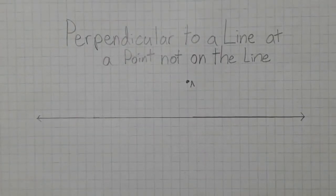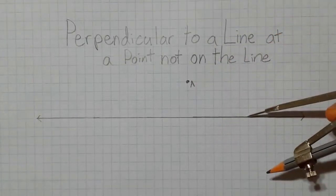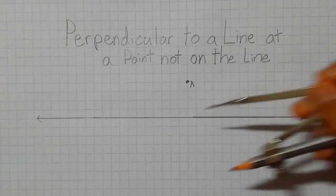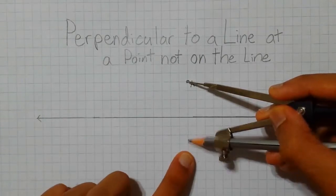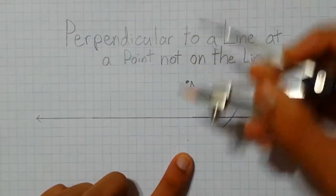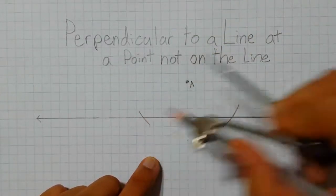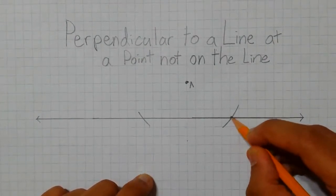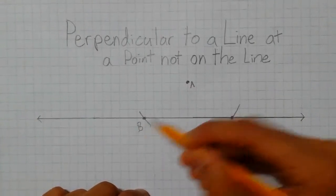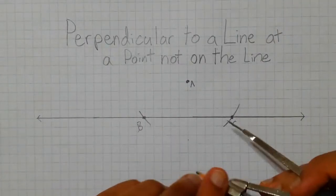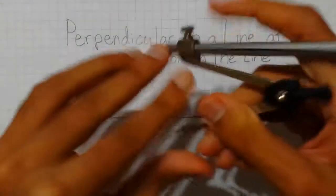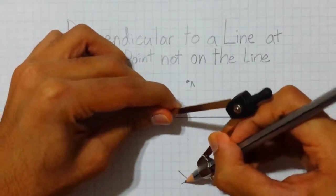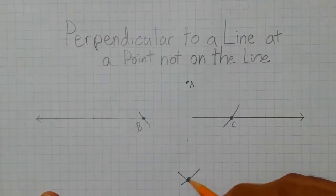A slight variation to the last construction — this one is the perpendicular to a line at a point not on the line. That point is point A, and we have our line here. To construct a perpendicular through point A through the line, we need to first place the tip of the compass on point A and place the other end more than the distance of the line. Then we will draw two arcs intersecting our line from point A. This gives us two points where these lines intersect that we can call C and B. Then placing the compass on point C and slightly extending the other end, we can draw two arcs from points B and C. This point of intersection we can call point D.